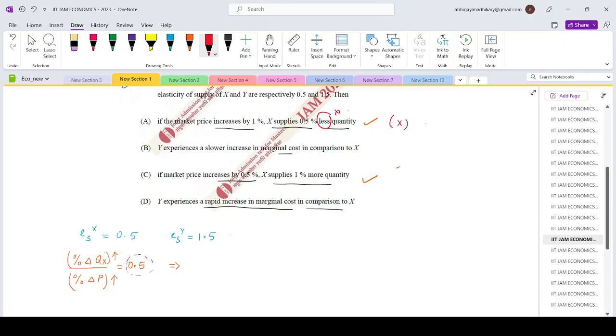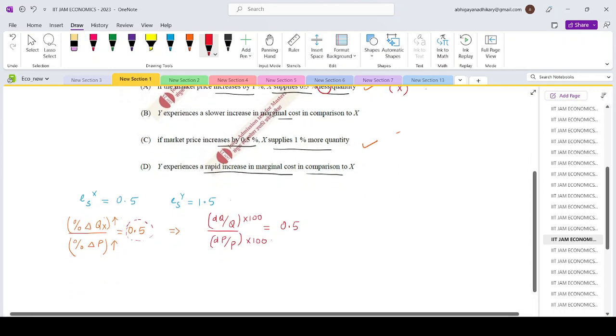Now let's go to option C. If the market price increases by 0.5%, then X supplies 1% more quantity. Let's check this. The percentage change in quantity, dq/q divided by dp/p equals 0.5. In order to put both of them in percentage, let's multiply both by 100.